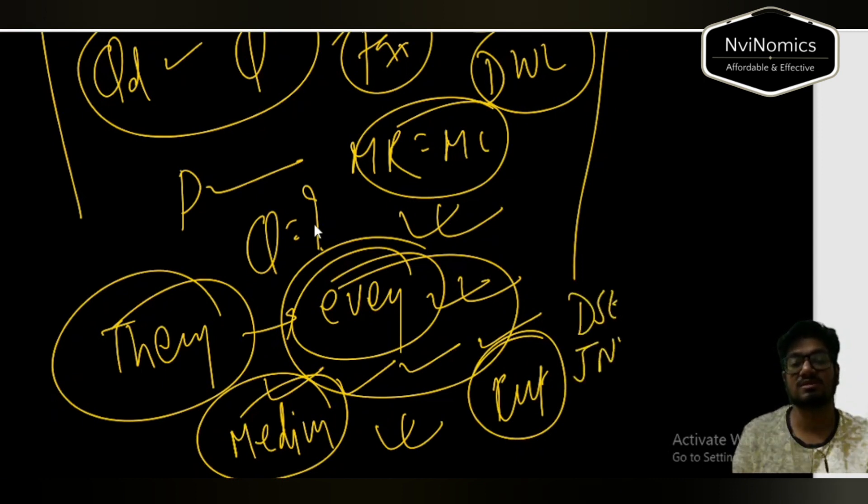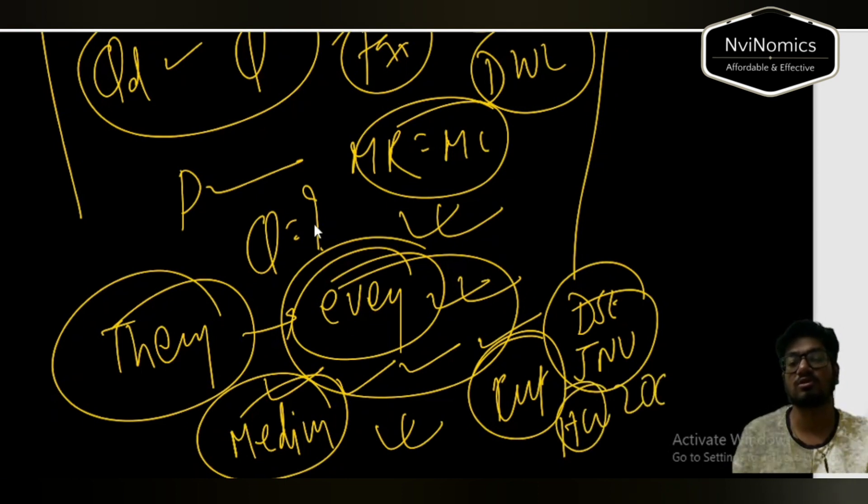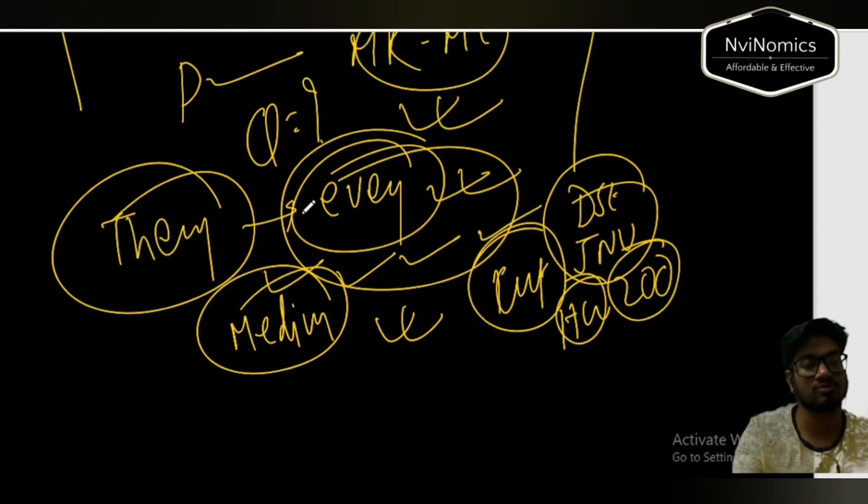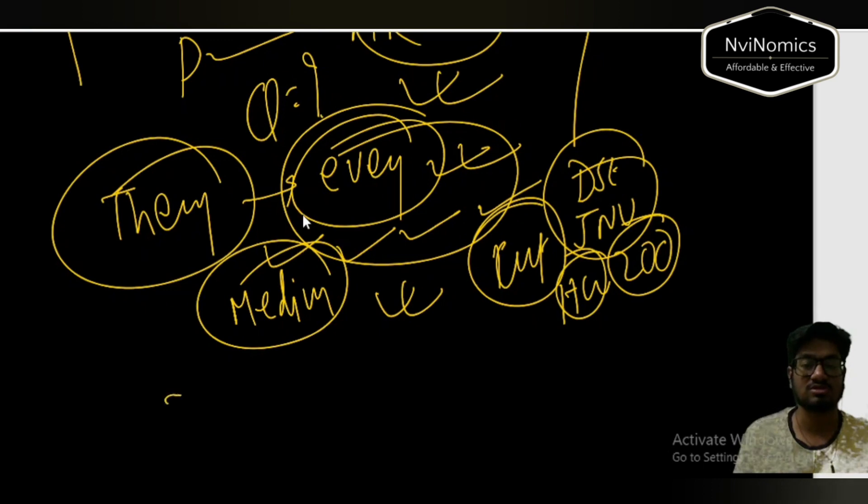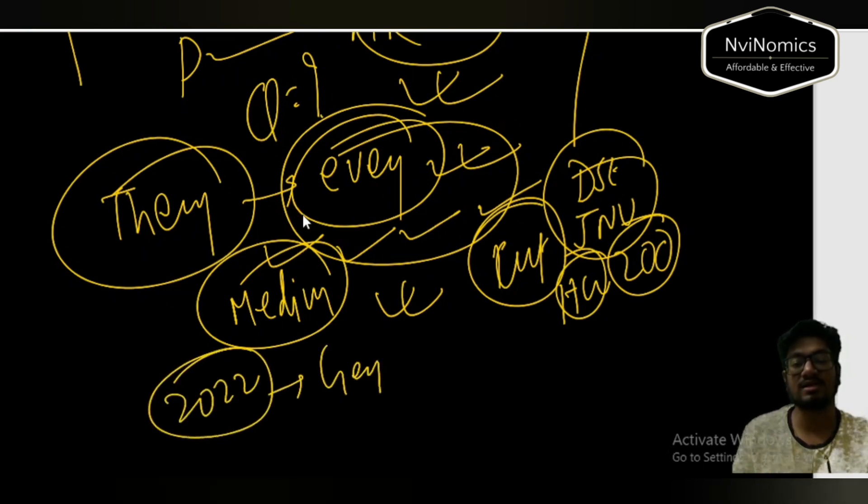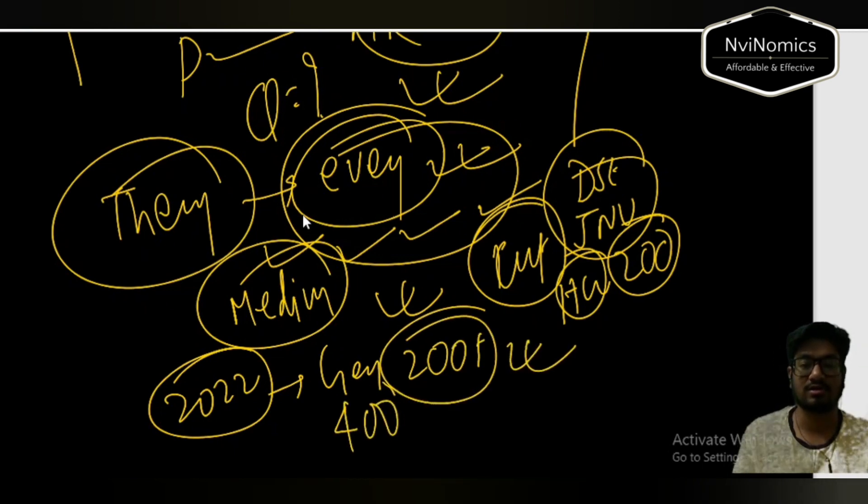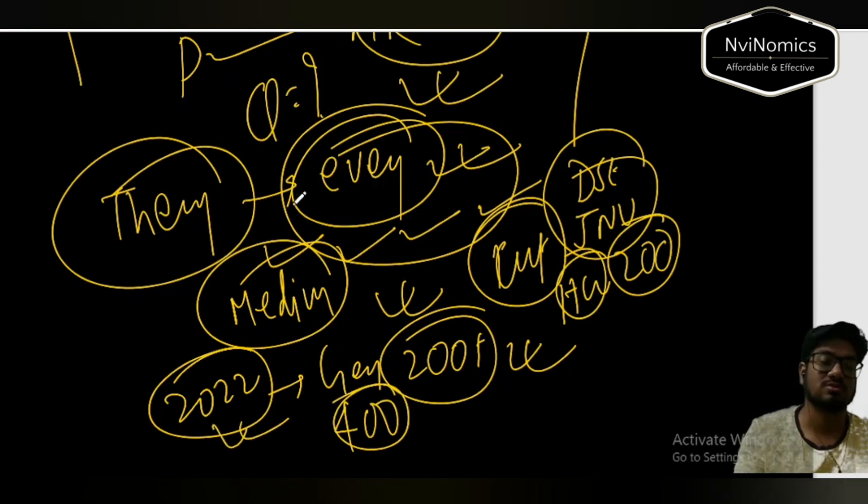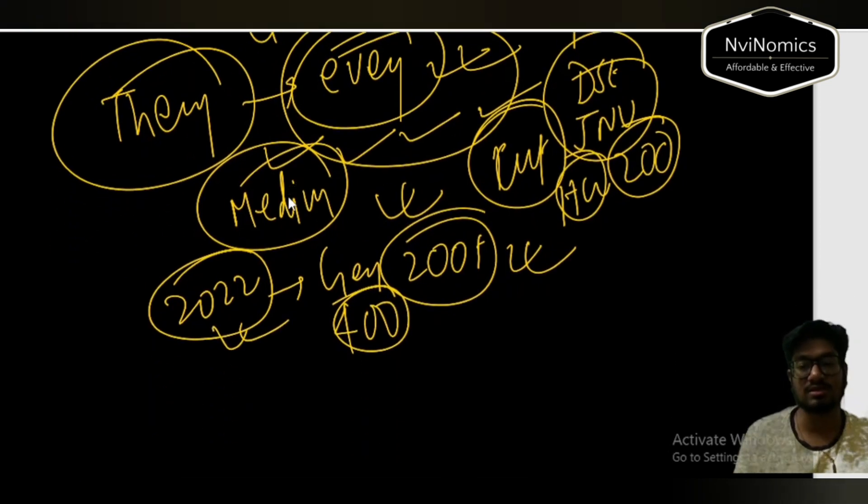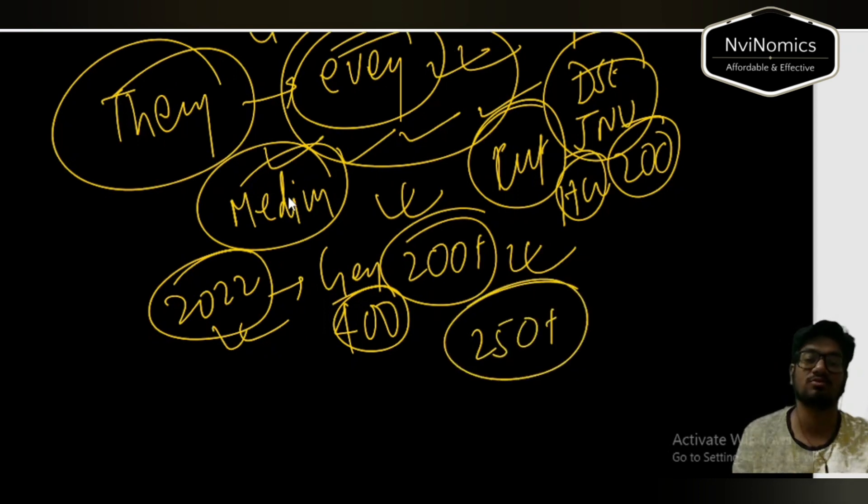For DSC and JNU, especially for HCU, if the question paper is relatively easier like 2022, for HCU in general category if your score is 200 plus, then you are almost safe. For JNU and DSC, DSC will be nearly 250. However, seats are there, I think 200 or so.